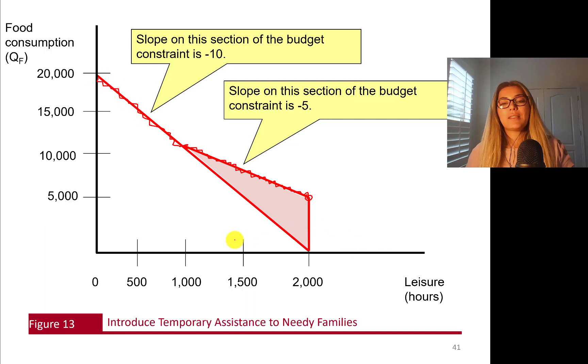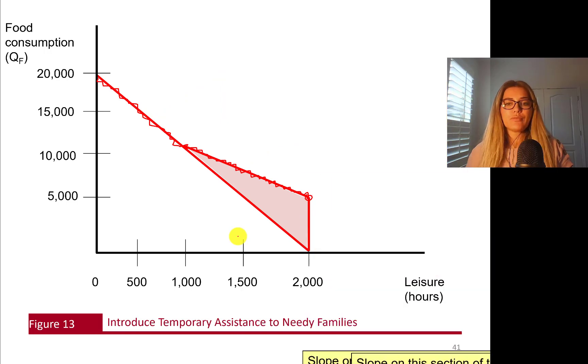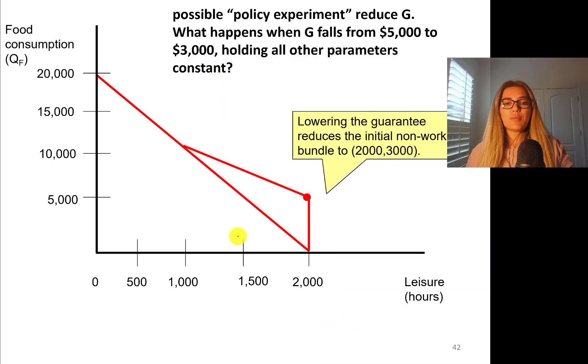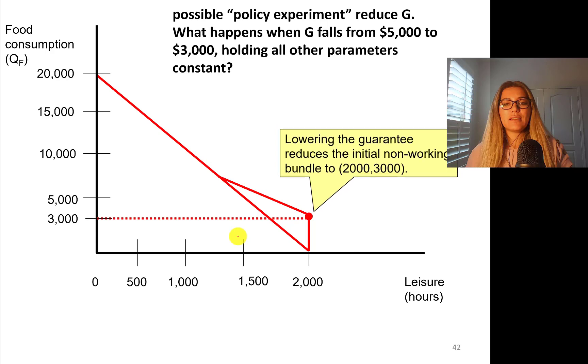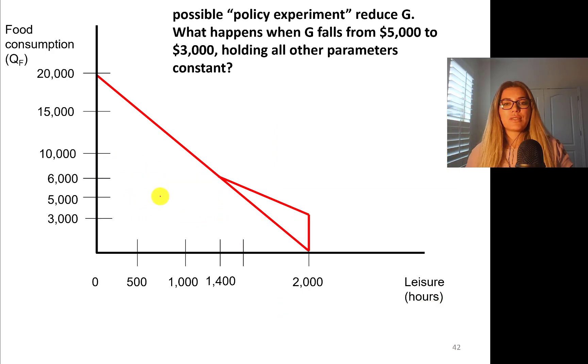What happens if the benefit guarantee rate is reduced to $3,000? This budget line shifts in, and the kink point also changes.